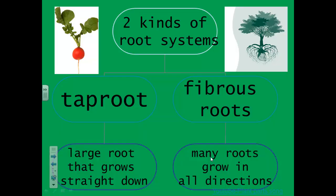There are two kinds of root systems. Each has different structures. One kind of root system is a taproot. A taproot is a large root that grows straight down. It remains the largest root structure as the plant grows. Taproots may store food for the plant. Small roots may grow sideways out of the main taproot.